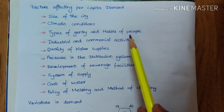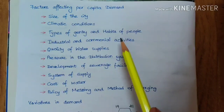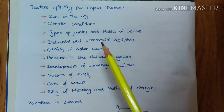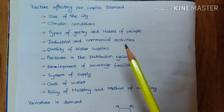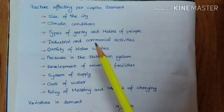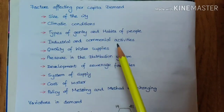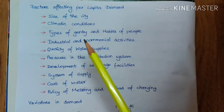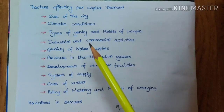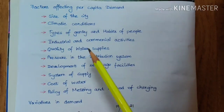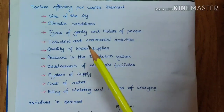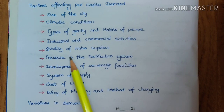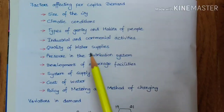The next factor is the type of gentry and habits of people. Rich people consume more water, while people who are very poor or live in slum areas use very little water. The next is industry and commercial activities — industries need more water, so if there are no industries in an area, the water demand will be lesser there.